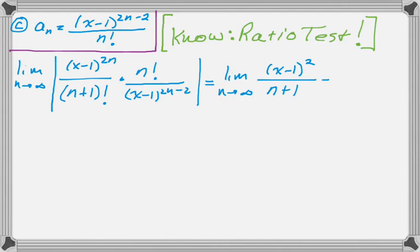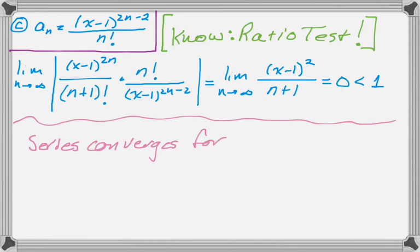Now if n goes to infinity, this limit equals 0 no matter what, which is always less than 1. And that's kind of an ideal situation because that means that the series just converges for all x.